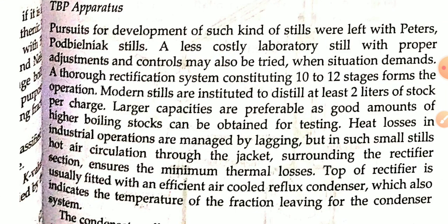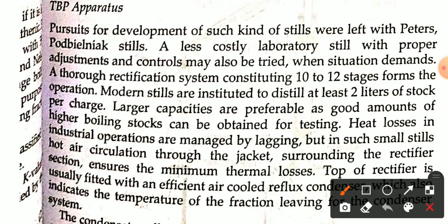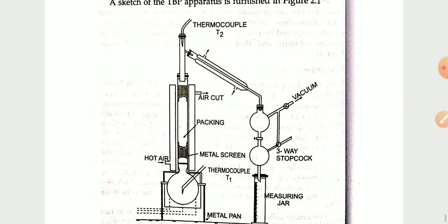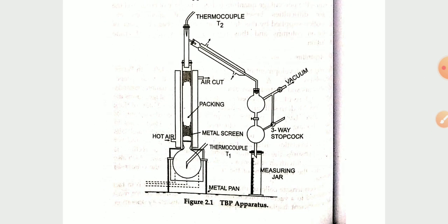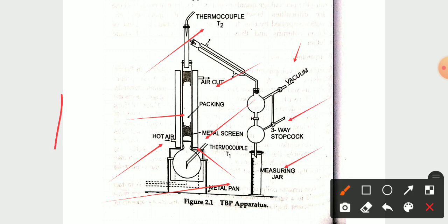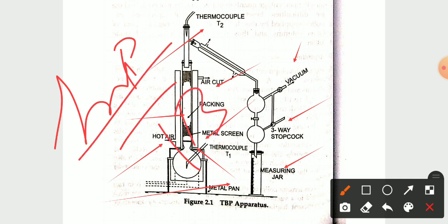This is the laboratory section part with glasses. The first component is a metal pan. The second one is the hot air inlet and outlet. This is the packing section part. A metal screen with thermocouple T2 is used. Then there is the vacuum section part and a three-way stopcock. And the last one is the measuring jar. This is the important section for the True Boiling Point apparatus.